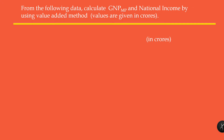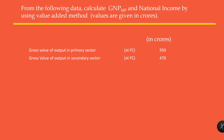Values are given in crores. Gross value of output in primary sector at factor cost: 950 crores. Gross value of output in secondary sector at factor cost: 470 crores. Gross value of output in tertiary sector at factor cost: 500 crores.